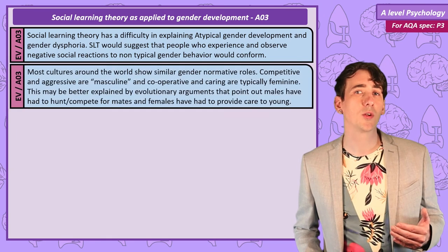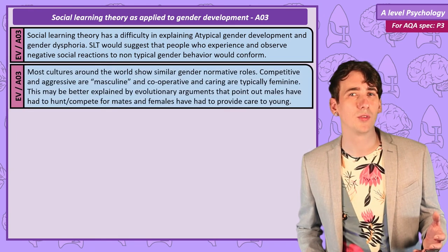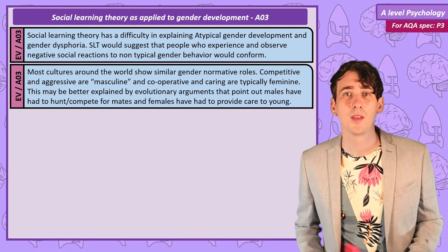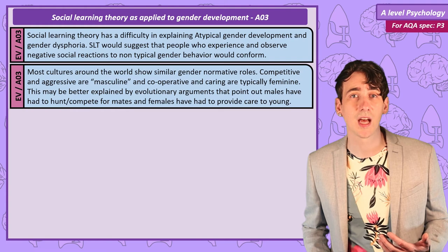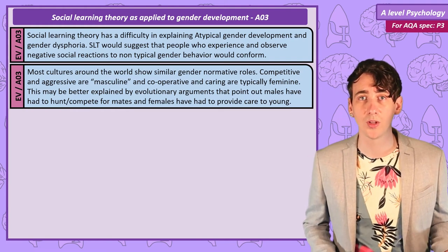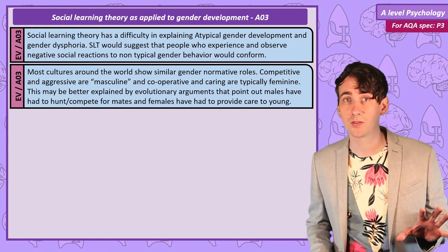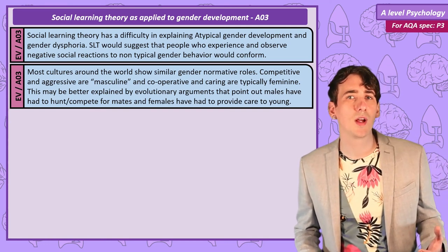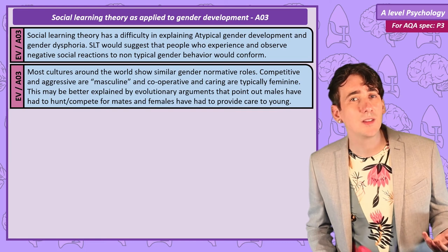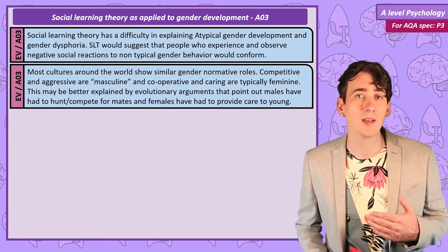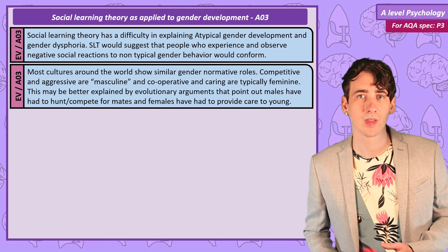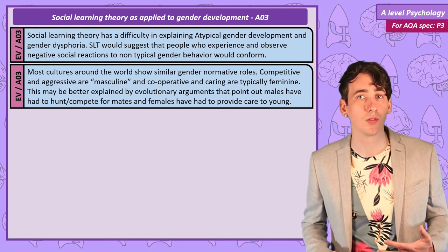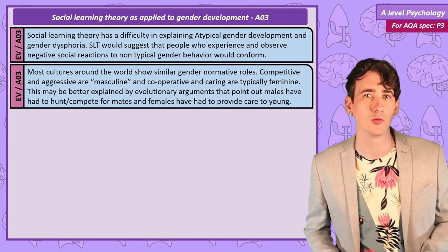While Mead's research did show some unusual examples of gender roles, these are exceptionally rare and might have been influenced by researcher bias. There are actually very few examples of societies where normative gender roles are not males being more competitive and aggressive and females being more cooperative and caring. As so many cultures show this pattern, it suggests there is a biological element to some fundamental behavioural differences, which can be explained by evolutionary pressures in which men compete for mates and females are responsible for early child rearing.